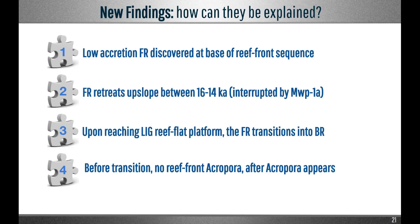To recap our new findings: we discovered a fringing reef unit at the base of almost all reef front cores, with a low accretion rate compared to other shallow units. We demonstrated that the fringing reef retreated upslope between 16,000 and 14,000 years ago and was interrupted by the first post-glacial meltwater pulse. We suspect the fringing reef transitioned into a barrier reef upon reaching the last interglacial reef flat platform at 87m. And we confirmed that before the transition, sediment-sensitive acroporids were absent and only appeared in abundance after the transition.